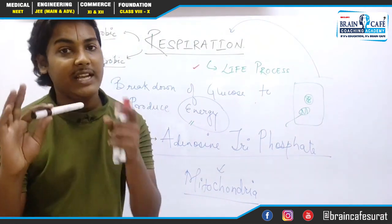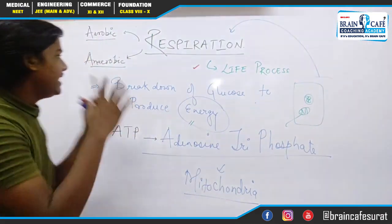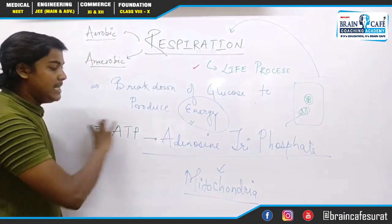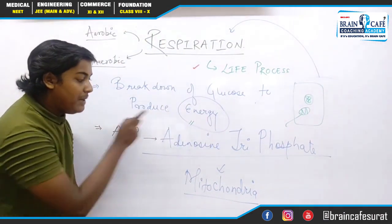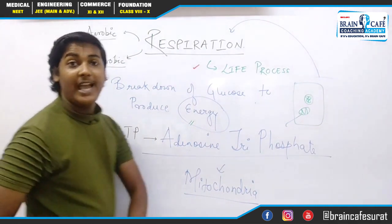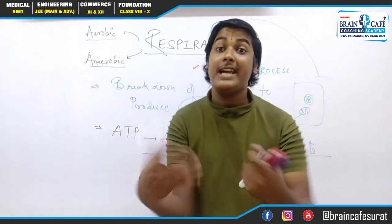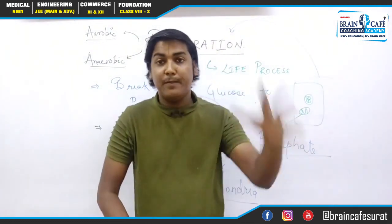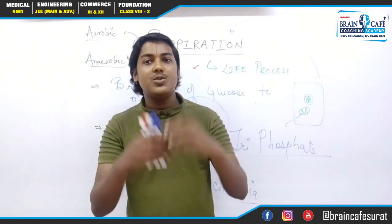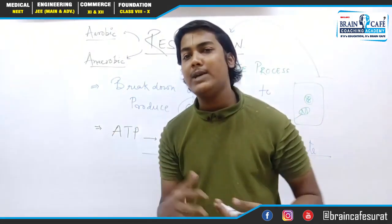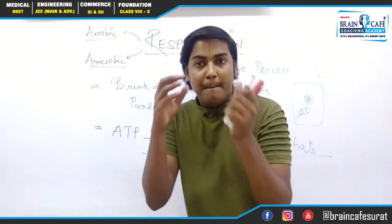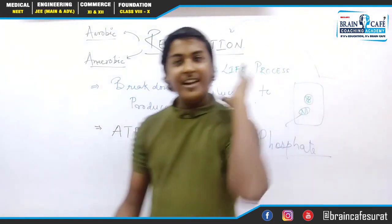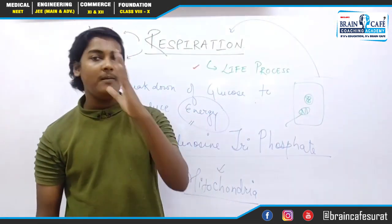So the concept should be very clear: What is respiration? Energy is produced in the form of ATP. What produces ATP? Mitochondria. How does it produce it? Glucose undergoes breakdown — that is why we called it a catabolic process. All of these things will be discussed in detail in upcoming videos, but fundamentally you should be clear on: what is respiration, its definition, and the full form of ATP.